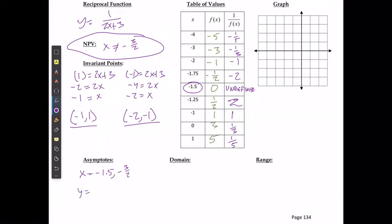And y is equal to 0 is going to be my second case. So I'm going to use a dotted line to state my asymptote where I have x is equal to negative 3 over 2, and I have my horizontal asymptote where it's just at y is equal to 0.